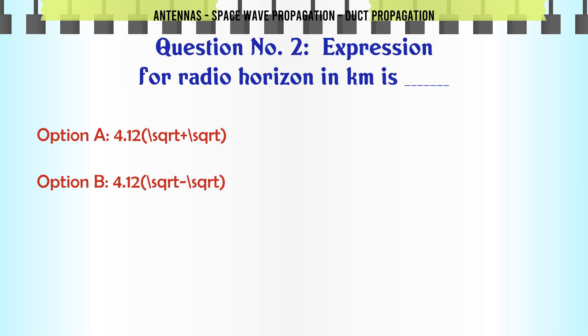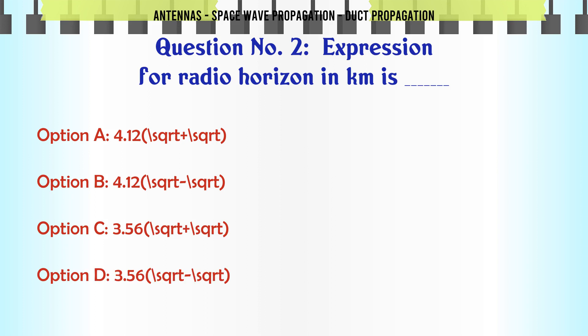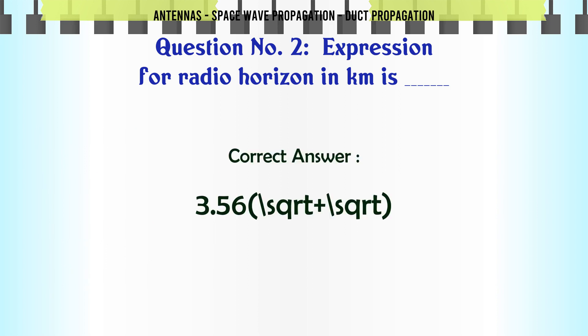Expression for radio horizon in kilometers is: A) 4.12(√h_T + √h_R), B) 4.12(√h_T + √h_R), C) 3.56(√h_T + √h_R), D) 3.56(√h_T + √h_R). The correct answer is 3.56(√h_T + √h_R).